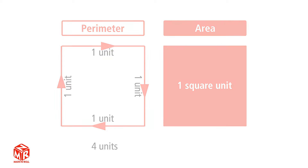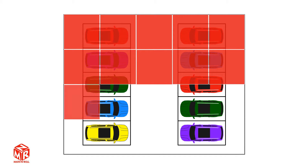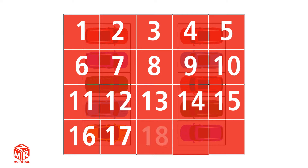Let's take a look at an example. Area is the number of unit squares needed to cover a flat surface. How many unit squares do we need to cover this parking lot? Let's lay them out and cover the parking lot. We fully covered the parking lot using 20 unit squares, so the area of the parking lot is 20 square units.